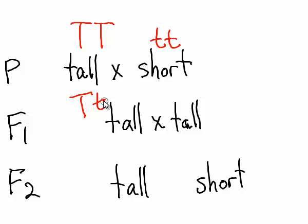If we cross two of these F1s together that are both big T, little t, let's see what their offspring are going to be.